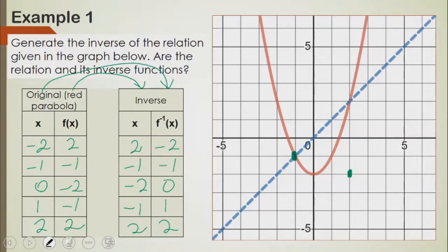That is x is negative 2, and y is 0. That's this point. Negative 1, 1. And 2, 2.